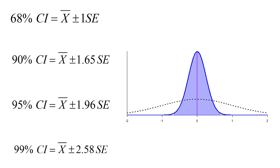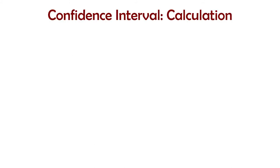Those are the benchmarks we're going to use — not 68%. The ones we use are 90%, 95%, and 99%: z-values of 1.65, 1.96, and 2.58. If you know how to look them up, you can always do that, but you can save yourself time by writing them down on scratch paper.